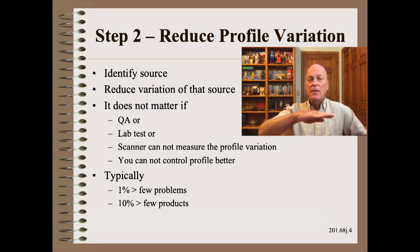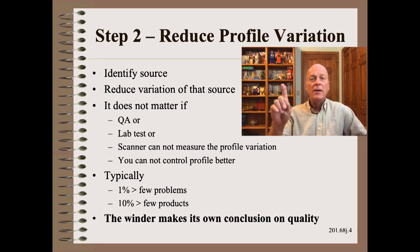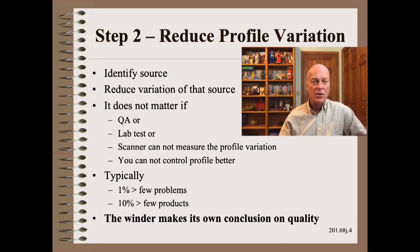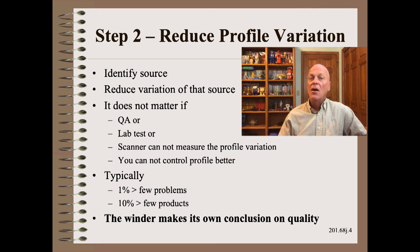The bottom line is this: the winder makes its own conclusion about web profile quality. If you have corrugations, gauge band valleys, or similar issues, the web quality is simply not good enough to wind.